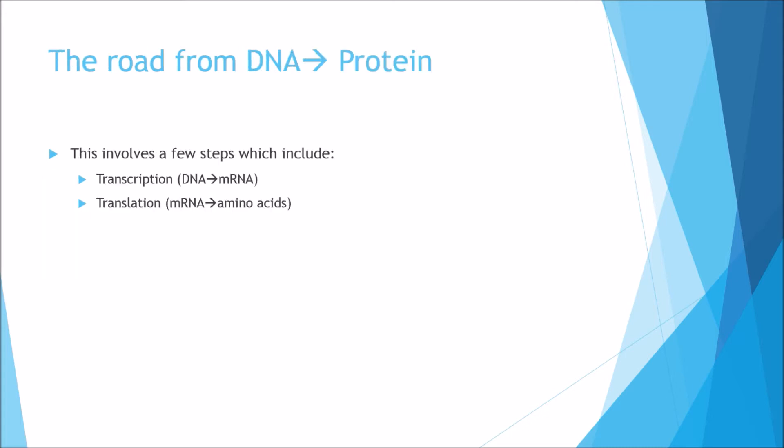Now we're going to talk about the road from DNA to protein. This involves two steps: transcription and translation. Transcription converts DNA into mRNA, and translation converts mRNA into amino acids. An easy way to remember this is that transcription is when you're copying something — copying the DNA into mRNA — and translation is when you're turning it from one format to another, from mRNA into amino acids, which is a different language.